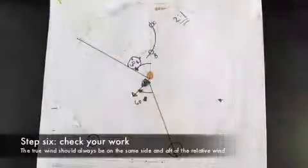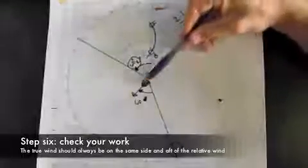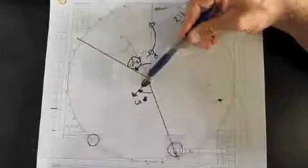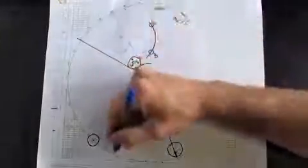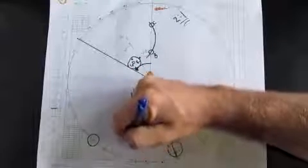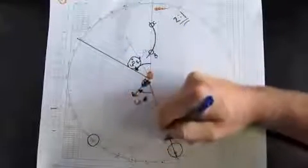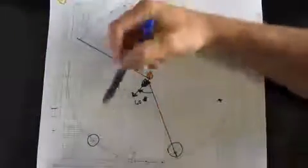To double check your work, you can always remember that the true wind is aft and on the same side as the relative wind. So our heading is 220. The relative wind is where we want it, 30 degrees off the port bow, and then the true wind should be on the same side and aft.